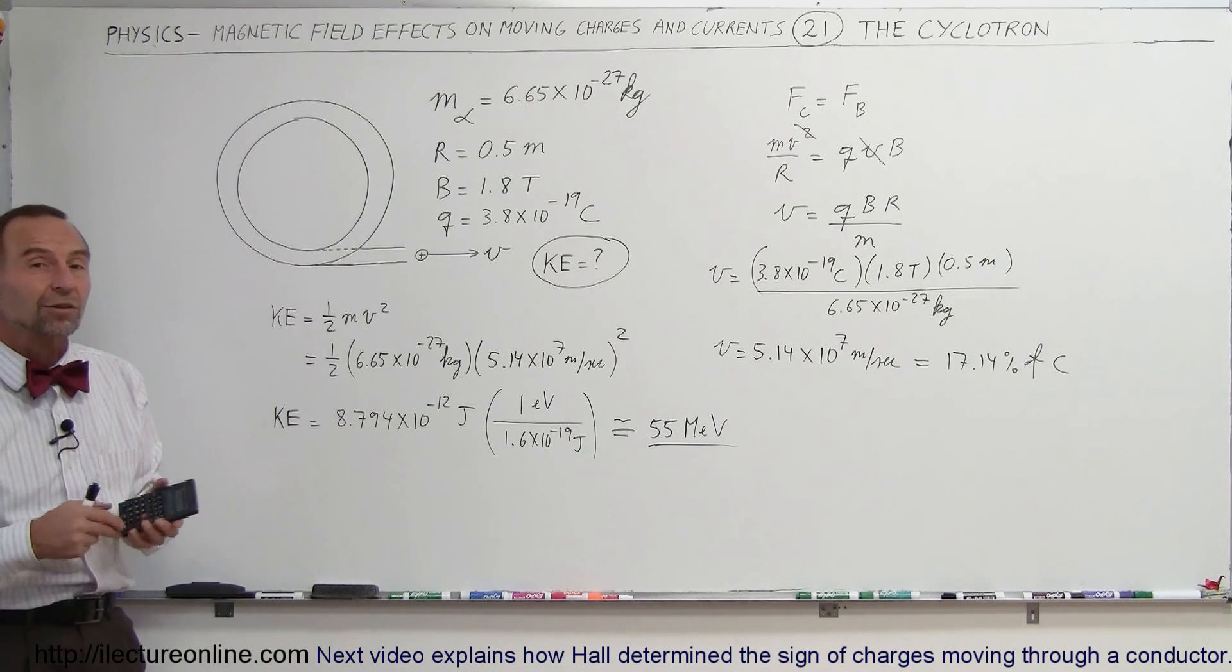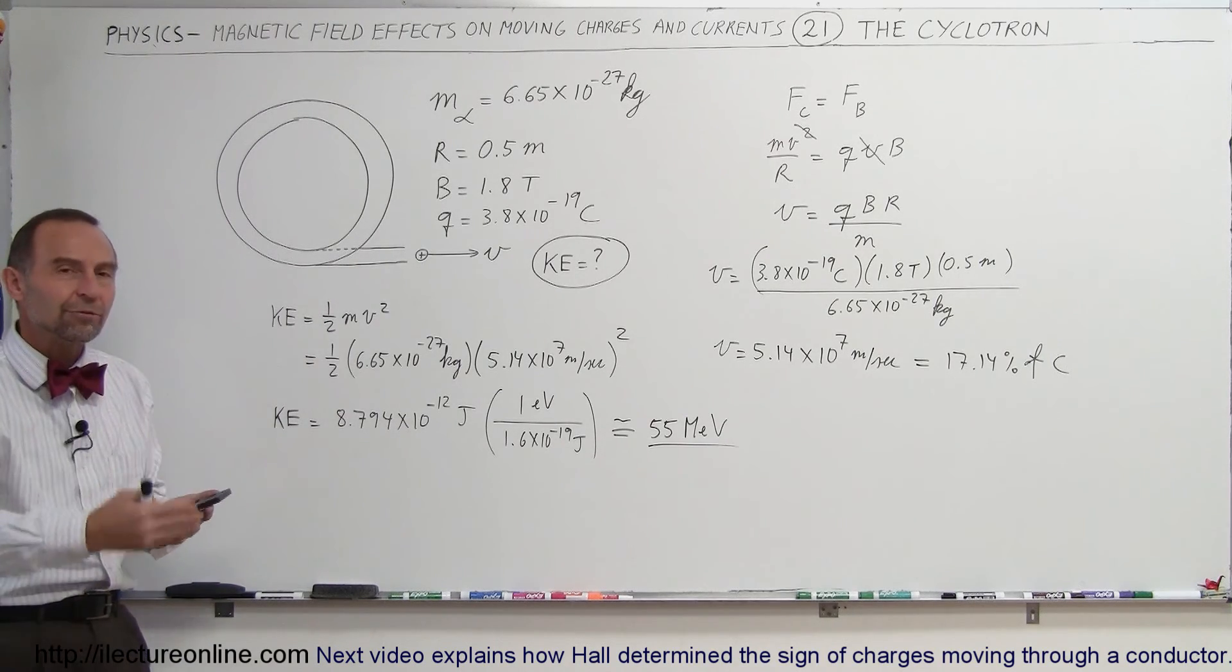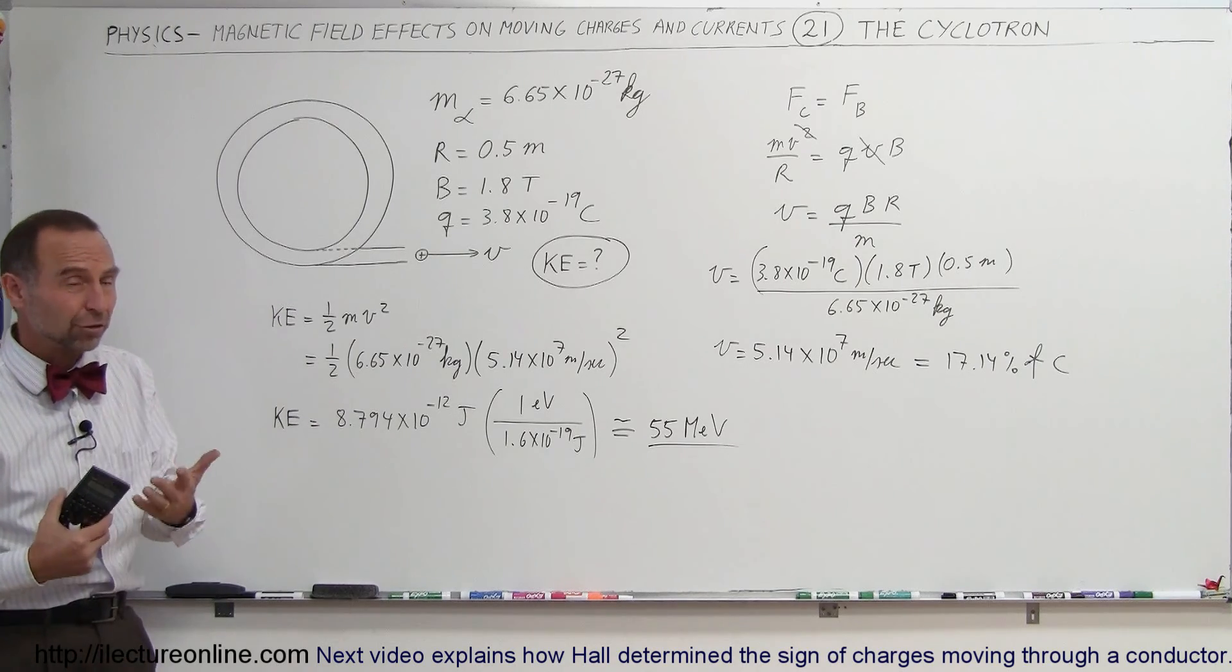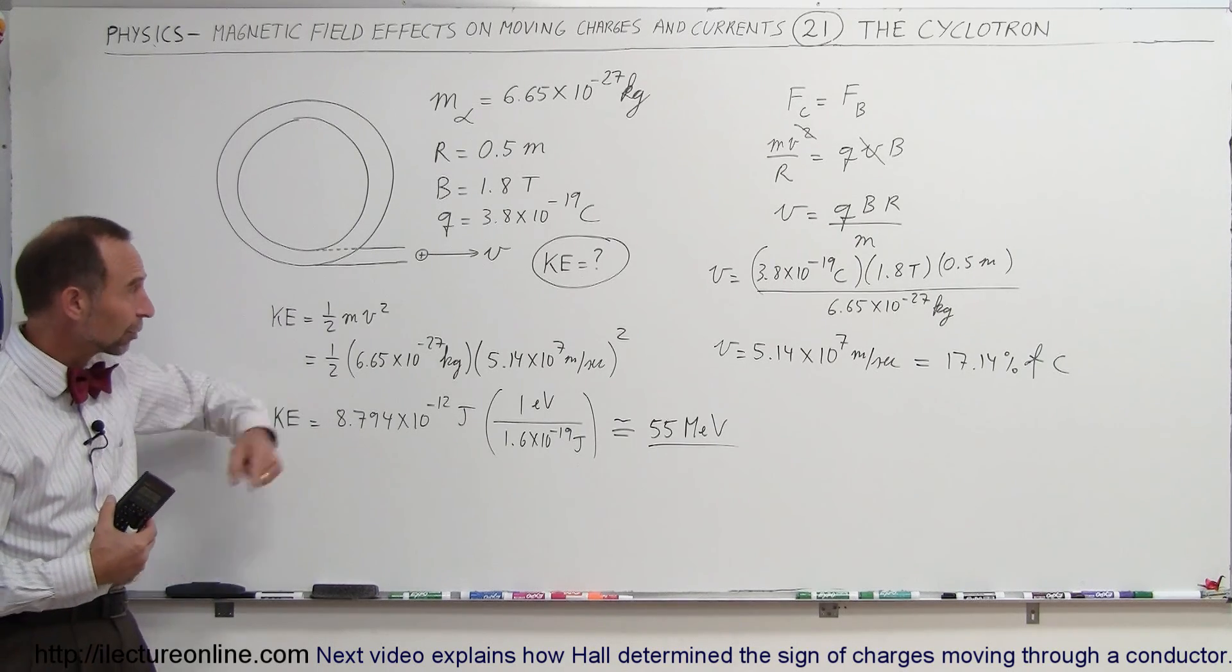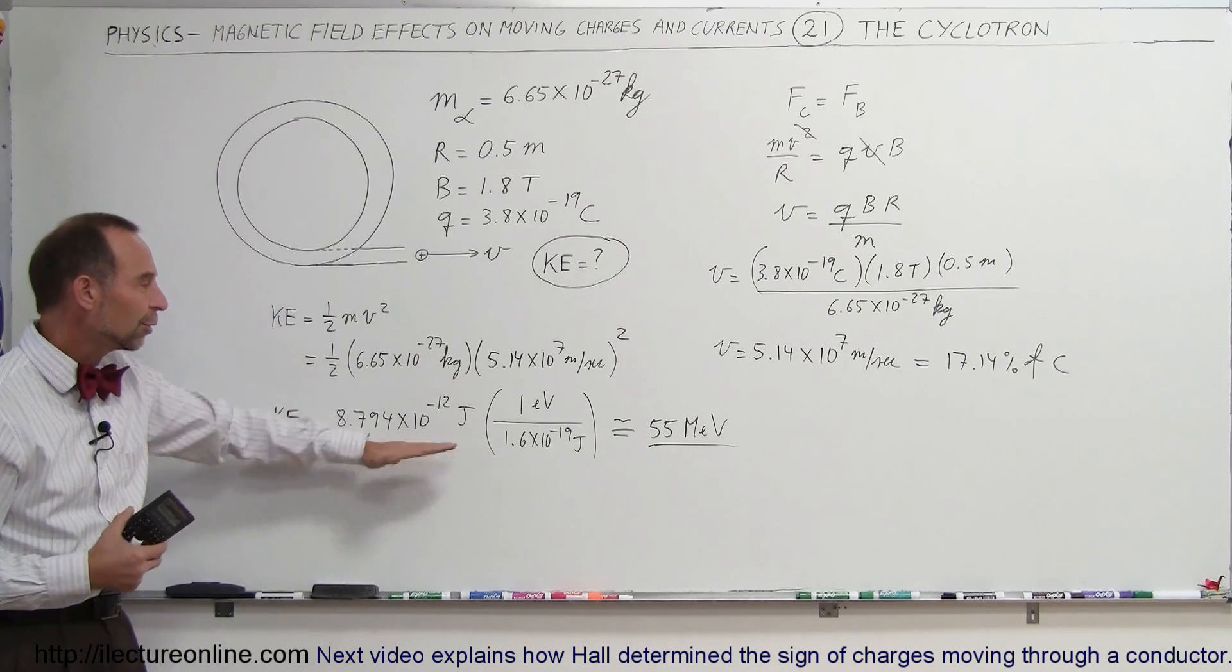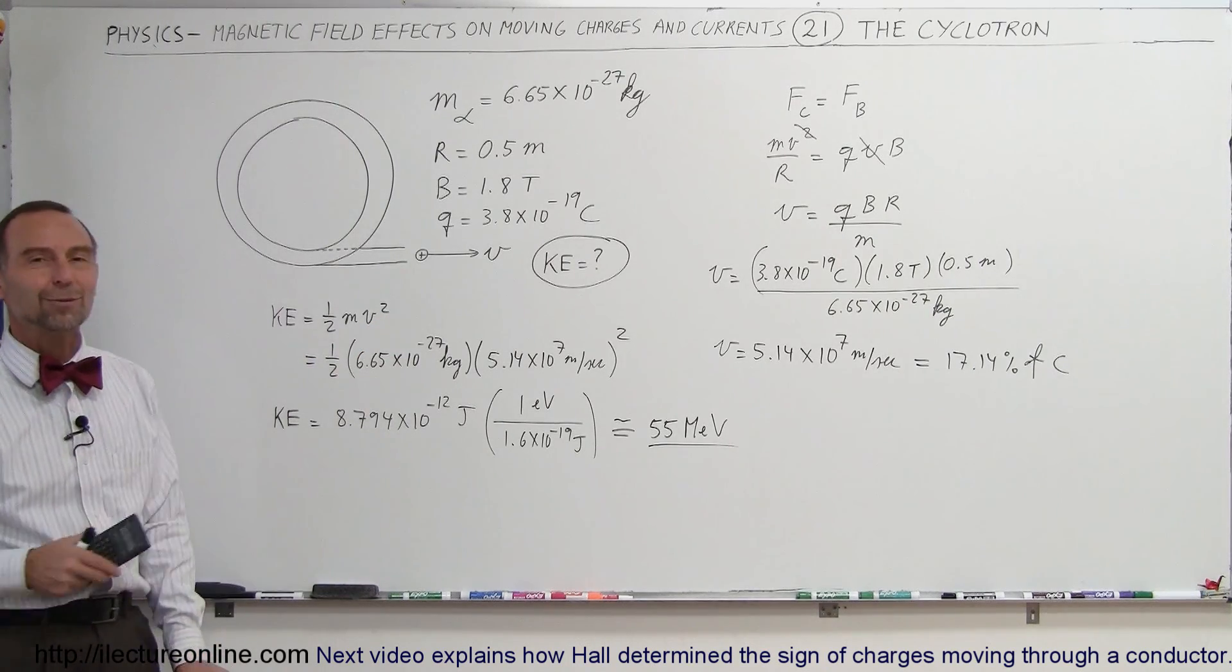And that's how we use cyclotrons. It allows particles to move up to very, very high velocities in a very small area by applying a very strong magnetic field, having them go around the circle at very high speeds, and then eject them from that to achieve these enormous kinetic energies. And that's how we do that.